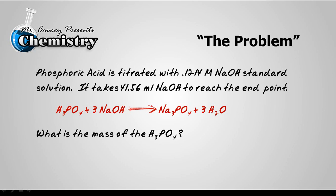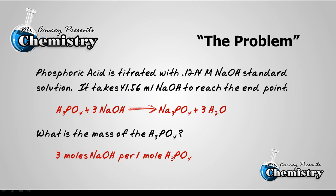And note that we have a standard solution of 0.1214 molar sodium hydroxide. So it's the standard solution we are going to use to find out the mass of phosphoric acid. And we know that during titration it took 41.56 milliliters of sodium hydroxide to reach the end point. So we need to know the molar ratio. And the mole ratio is 3 moles of sodium hydroxide per 1 mole of phosphoric acid. And we need to remember that it's a 3 to 1 relationship there.